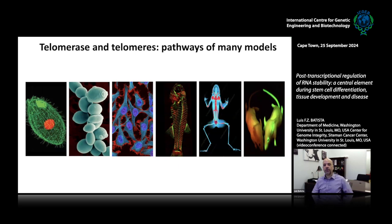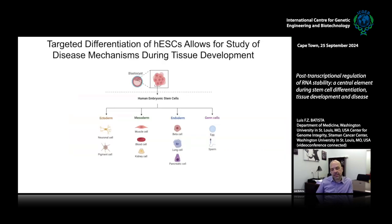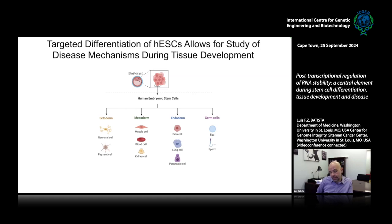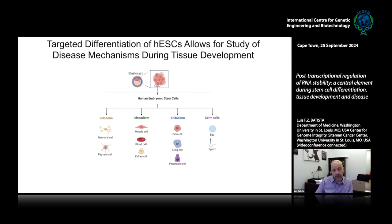When I started my own lab I thought it would be a good idea to create a new model of study, and that's when we started having the idea of using targeted differentiation of human embryonic stem cells into different tissues relevant for this disease — to try to understand how the disease develops and whether there are points during development that we can manipulate and maybe reverse tissue failure. I started my lab in 2014, around the time that CRISPR technology was becoming widely available, so we decided to create a large panel of isogenic human embryonic stem cells.